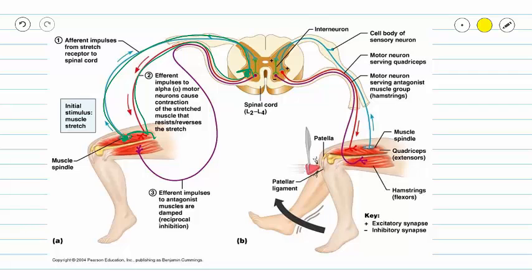However, the sensory neuron also branches and goes to other interneurons, which have an antagonistic effect on our reciprocal muscles. So even monosynaptic reflexes are not as simple as they look. If you have any questions regarding monosynaptic reflexes, please do not hesitate to contact your instructor.